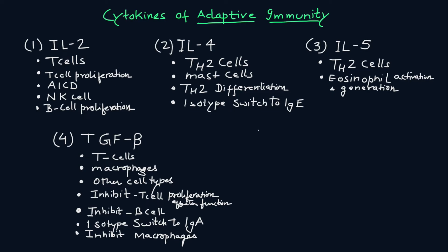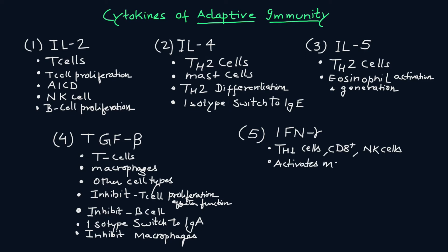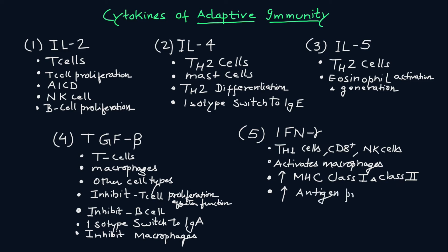The fifth cytokine is IFN-gamma, interferon gamma. It is produced by Th1 cells, CD8-positive cells, and NK cells — natural killer cells. It activates macrophages, which is an important function, and causes an increase in MHC class 1 and class 2 expression. A second function is the increase in antigen presentation.